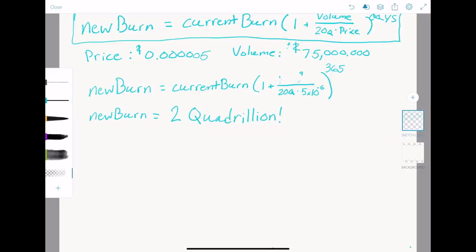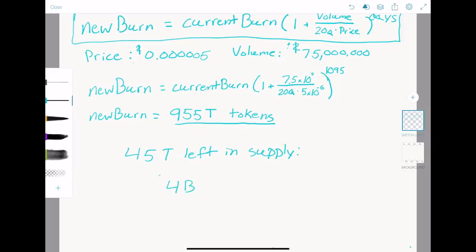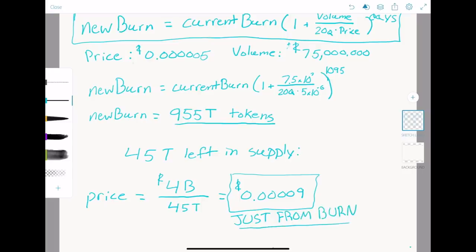If we keep our price of $0.000005, our equation says in three years the burn wallet will own 955 trillion tokens, leaving 45 trillion left. Even if we do not gain market cap at all, and our valuation for SafeMoon stays the same, our price would be $0.00009, or again 18 times higher than it is right now. Even if we do not grow at all as a community or a company, just from a low daily volume, we will see the supply shrink incredibly low if the price stays at these low levels.